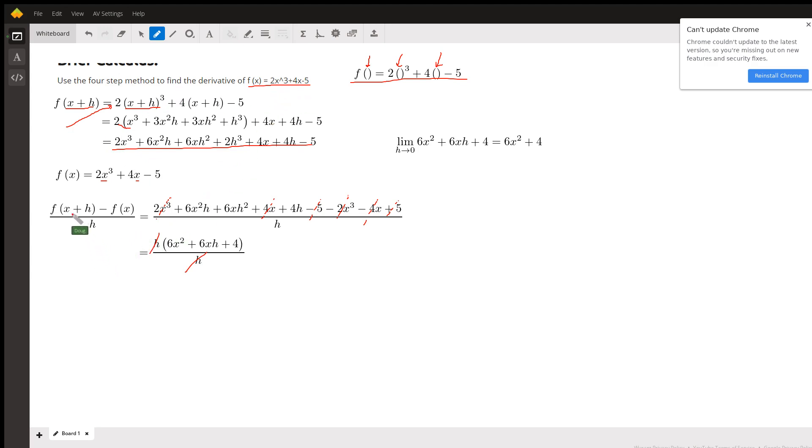Step 3 is to find what we call the difference quotient. It's actually the change in y over the change in x. If I subtract f of x from f of x plus h, that means I'll be taking the opposite of every one of these terms. That's why I have a minus 2x cubed, a minus 4x, and a plus 5.